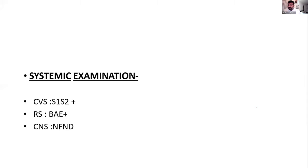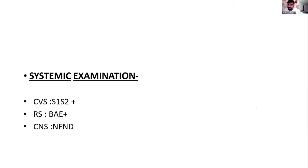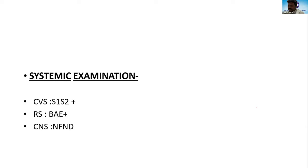The examiner asks how to proceed with management. Student: to confirm the diagnosis, I will do a liver function test, USG abdomen, and triple-phase contrast CT. Examiner prompts for all blood investigations first. Student: hemoglobin, RFT — urea and creatinine — liver function test, and viral markers.